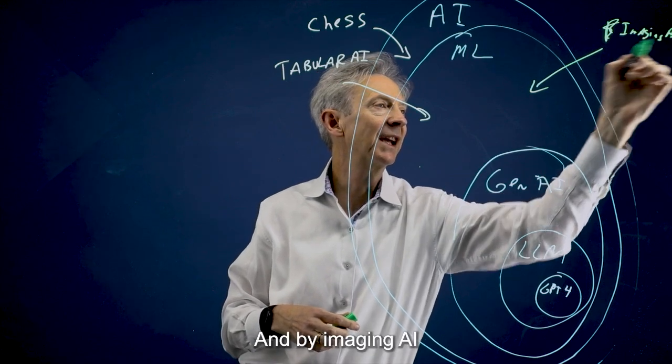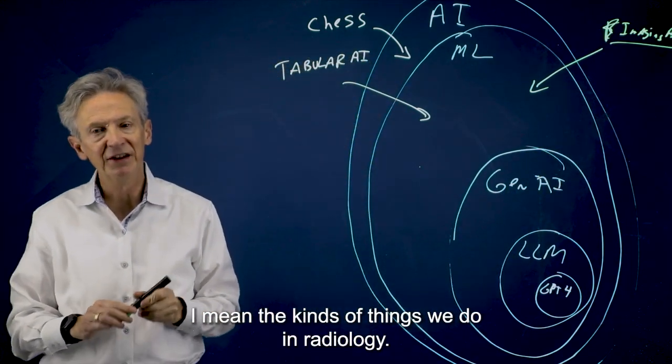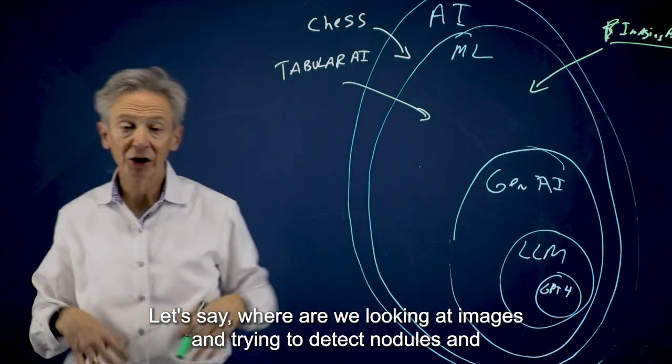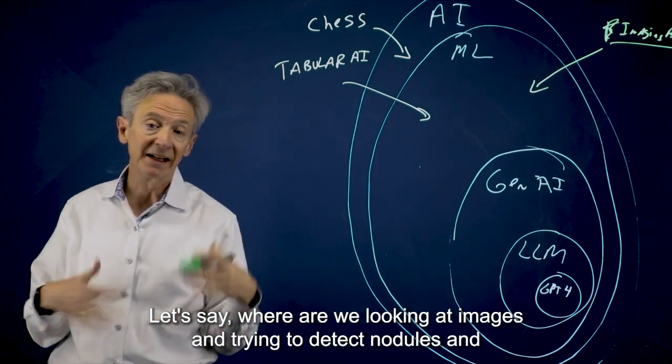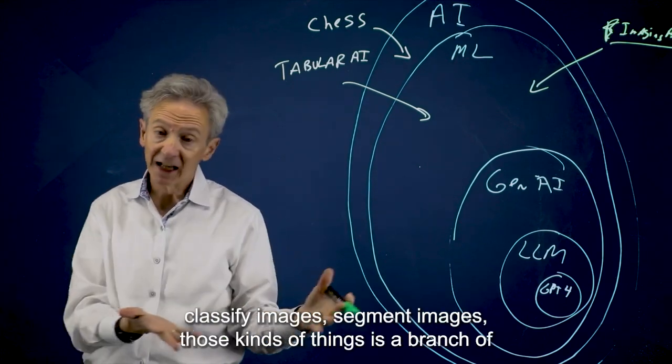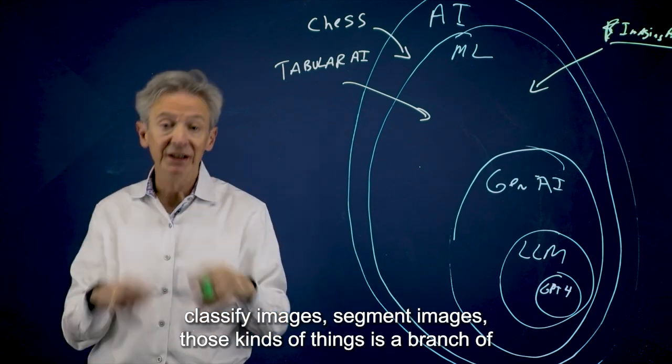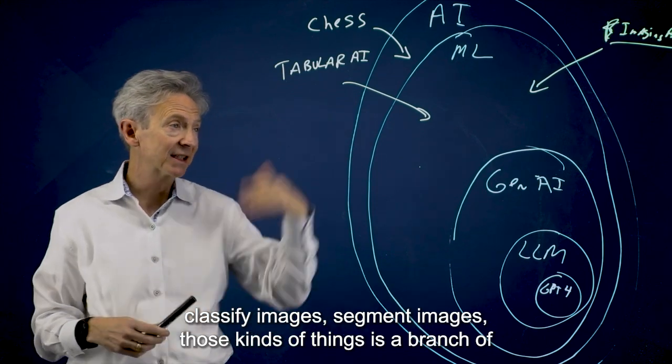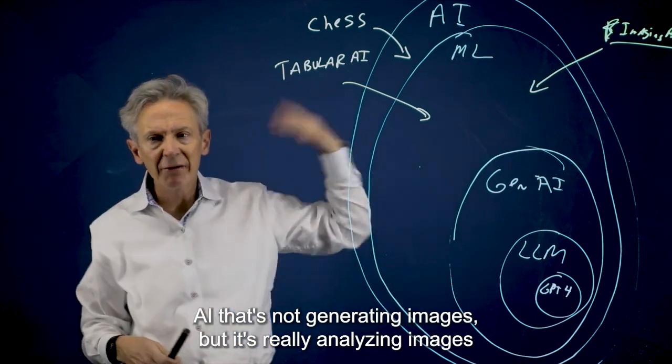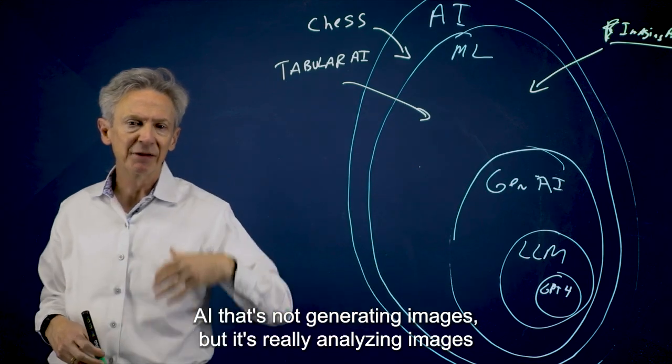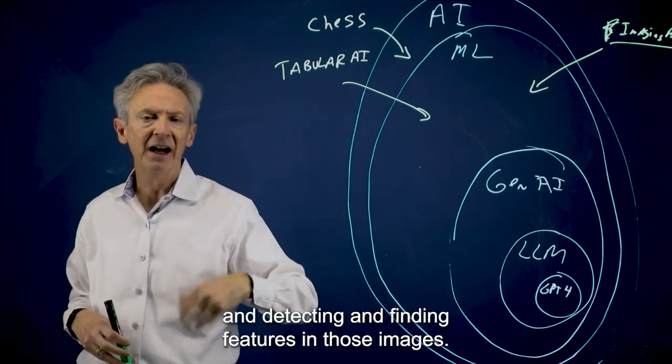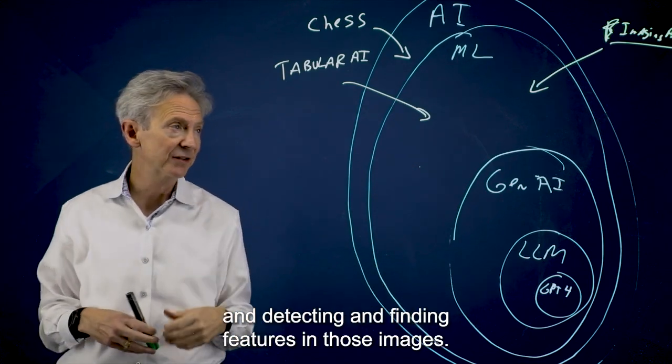And by imaging AI, I mean the kinds of things we do in radiology, let's say, where we're looking at images and trying to detect nodules and classify images, segment images. Those kinds of things is a branch of AI that's not generating images. It's really analyzing images and detecting and finding features in those images.